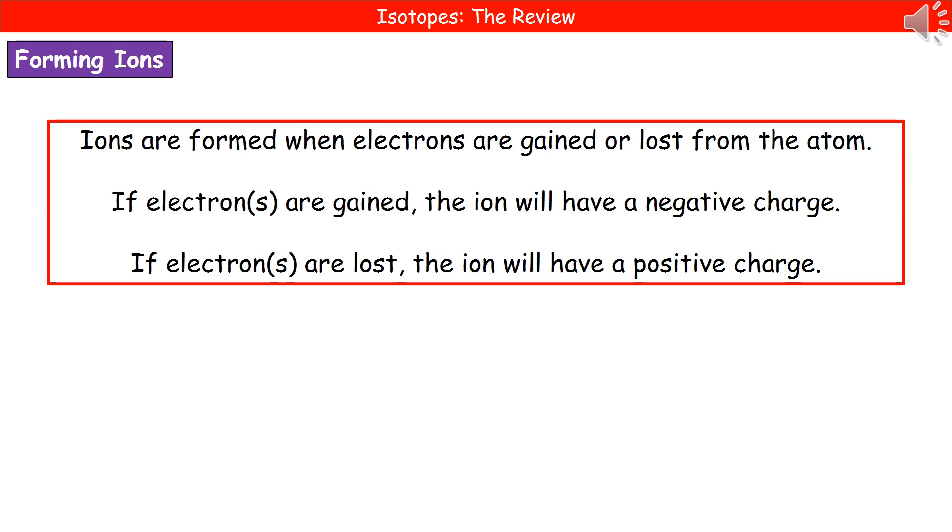So we mentioned that word ion earlier on and said it was a charged particle. We do need to know how these ions form. And quite simply, they're going to form by the movement of electrons. They'll either be gained or lost from the atom. So if our atom is gaining electrons, then the ion that we make will have a negative charge because there'll be more electrons than protons.